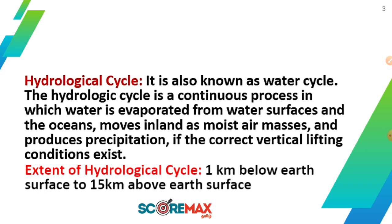Water and subsurface — you have to be able to evaporate ground water. Ground water is about 1 km below the earth surface. If you go to a certain cycle, the clouds are 15 km above the earth surface. So there is precipitation and rainfall in this extent.